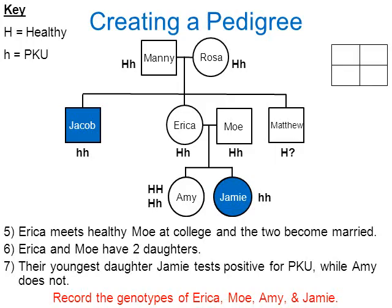Building a Punnett square for Erica and Moe, both heterozygous, we fill in all four boxes. Amy is not homozygous recessive — the story says she's healthy. Just like Matthew, we can't determine Amy's exact genotype: there's a one-in-three chance she's homozygous dominant (HH) and a two-in-three chance she's heterozygous (Hh). That completes this pedigree for the fictional family.